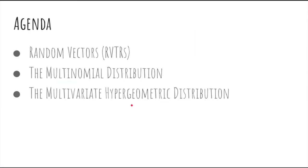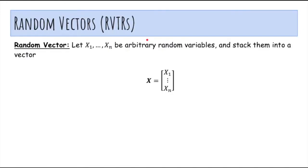In this video we'll talk about the multinomial distribution, including random vectors and the multivariate hypergeometric distribution. So what's a random vector? It's basically a bunch of random variables stacked into a vector.